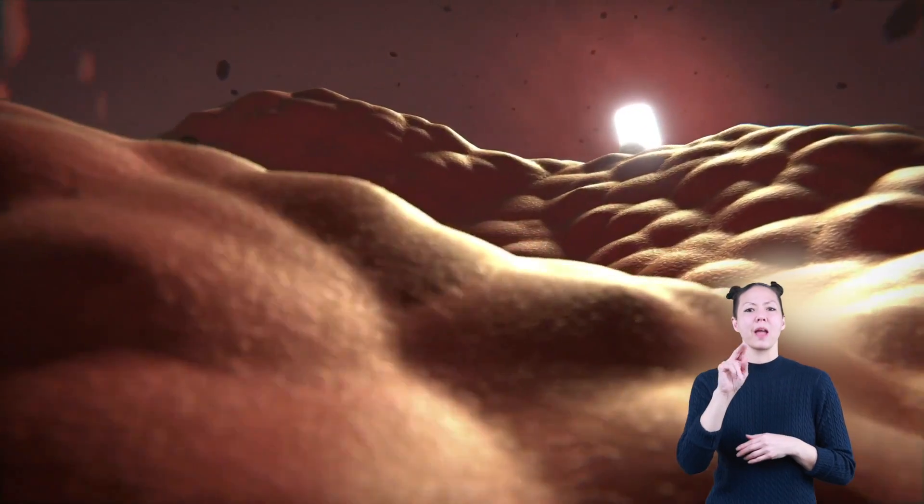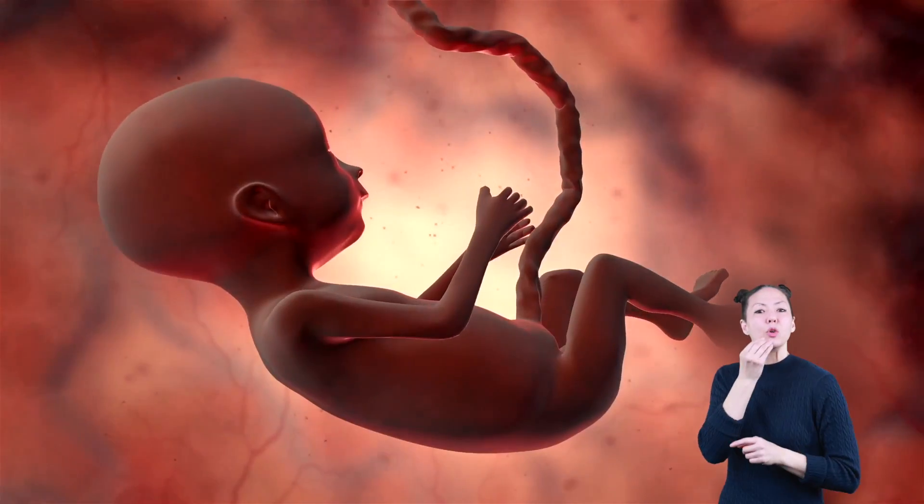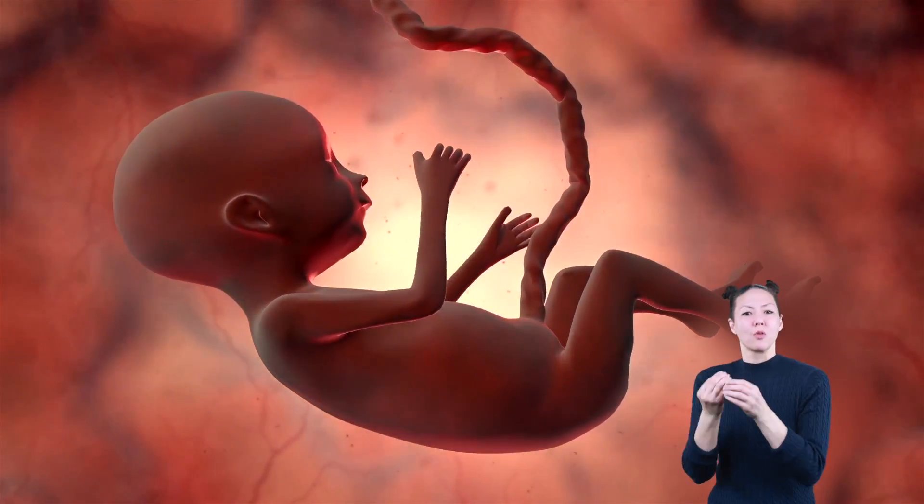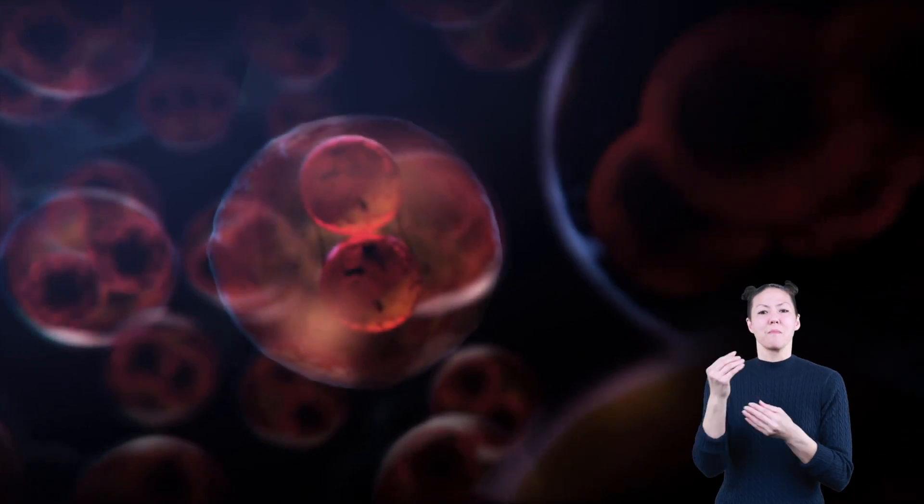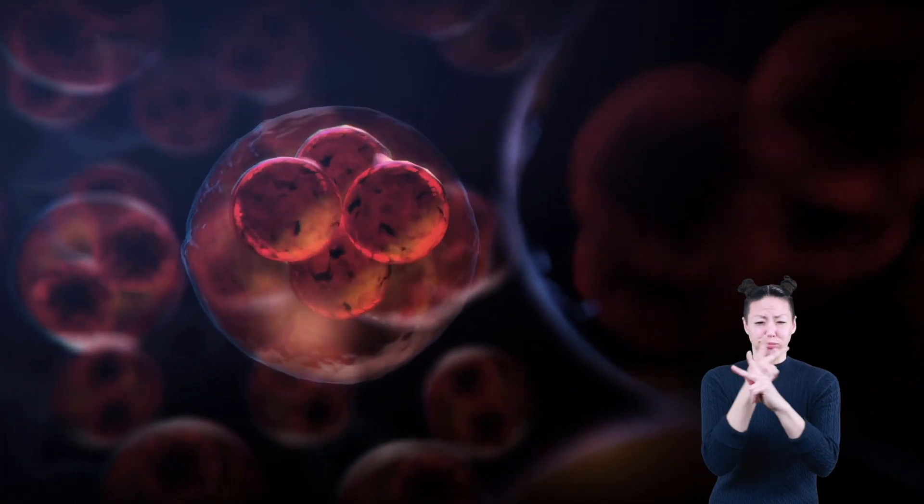That embryo is what develops into a baby. The outer group of cells, which are called membranes, are what protect and give food to the embryo, which keeps it alive and growing. By week five, the embryo cells are doing much more than just multiplying and dividing.